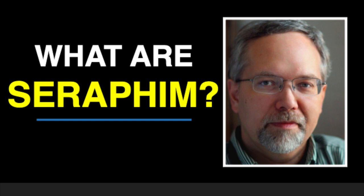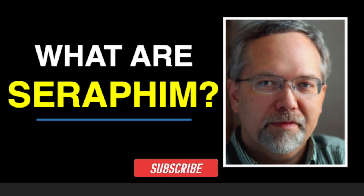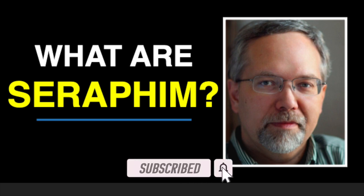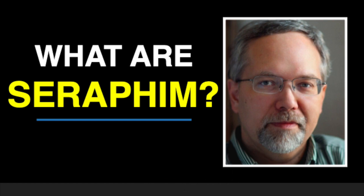Do they really look like snakes with wings? This takes us into all sorts of things. This is one of those cases where I wish certain journal articles were publicly available. This one might actually be publicly available because it's from Biblica. If you want to Google Biblica — B-I-B-L-I-C-A — and put in the last name P-R-O-V-E-N-C-A-L. I think his first name is Philip, but I could be mistaken. There's an article on the term seraph and the seraph terminology.